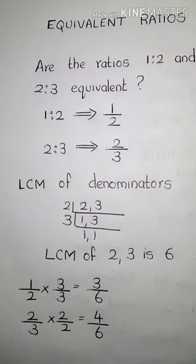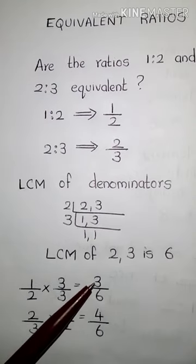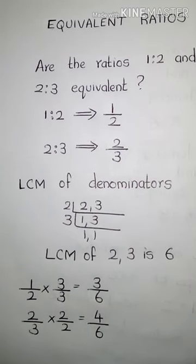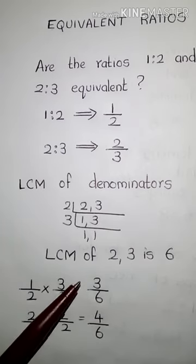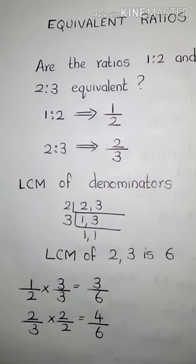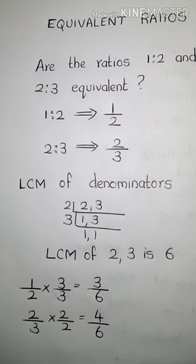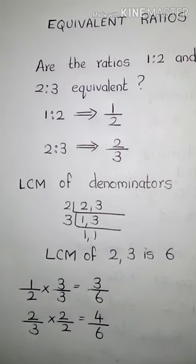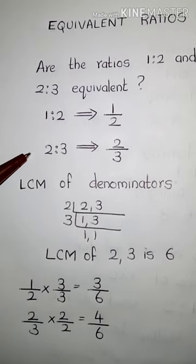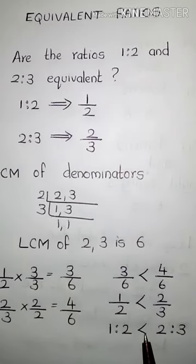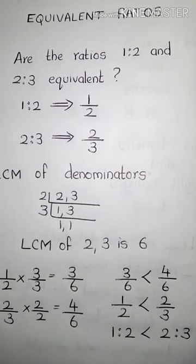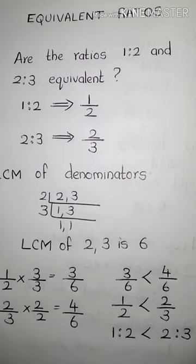Comparing numerators, 4 is greater than 3, so 3/6 is less than 4/6. That means 1/2 is less than 2/3, or in ratio form: 1 is to 2 is less than 2 is to 3. So the two ratios are not equivalent. Today we have learned about ratios and equivalent ratios. Hope you understood the concepts clearly.